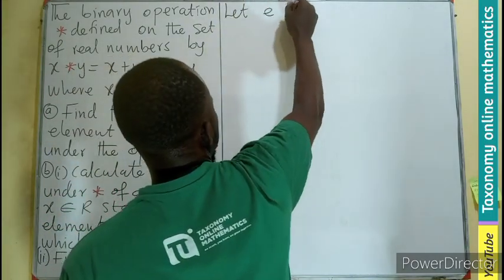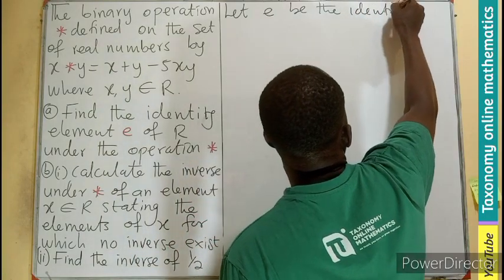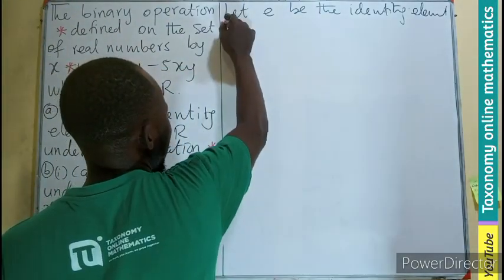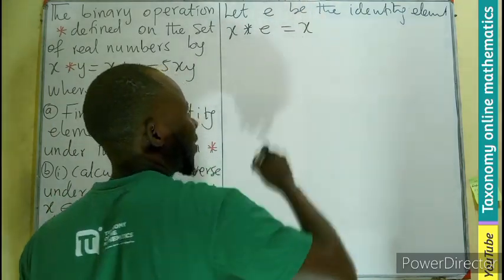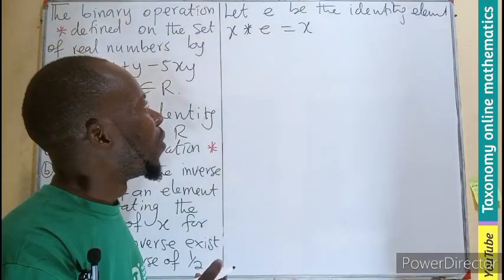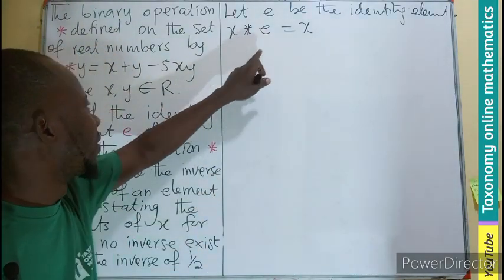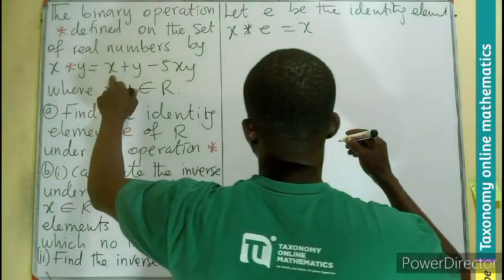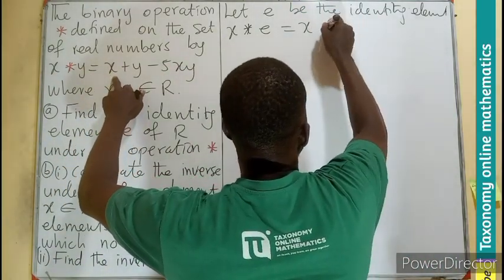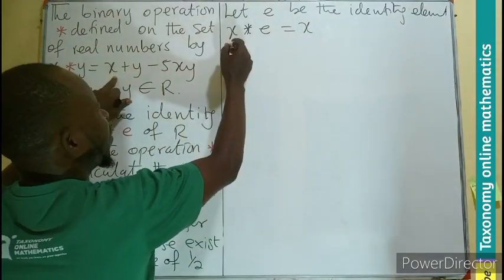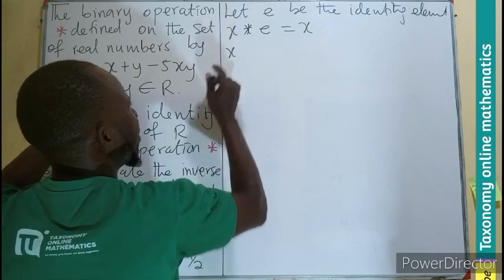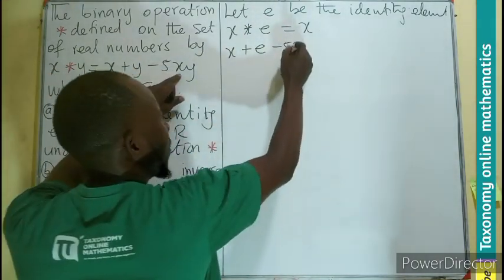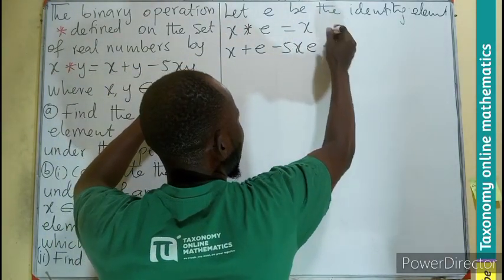So first, let e be the identity element. So we can say x star e will give us x. That is the operation with the identity. Then, we are going to operate this based on the operator definition. This means that if I have x, the first term plus the second term minus 5 times the first term times the second term, which equals x.